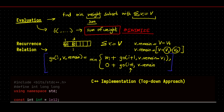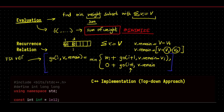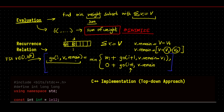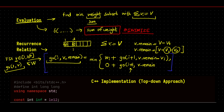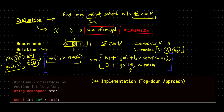Since we fix V in the range 1 to 10^5, we call the function starting from index n with V_remain initially equal to V. If the returned minimum weight is less than or equal to the knapsack capacity W, then that V is a valid answer. Since we want to maximize the value, we find the maximum V for which this condition holds.